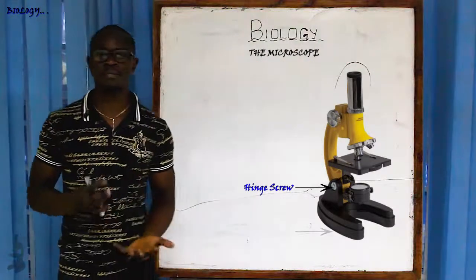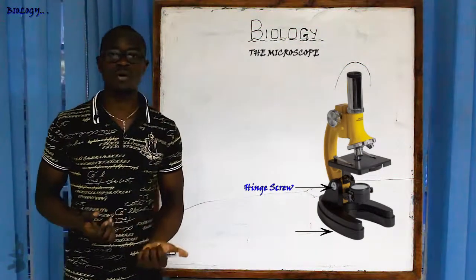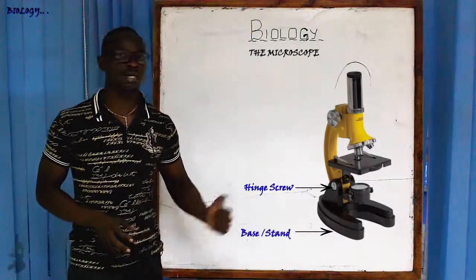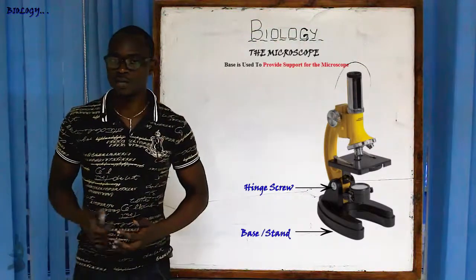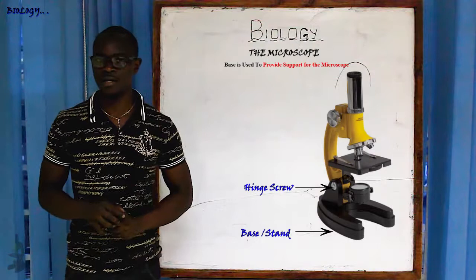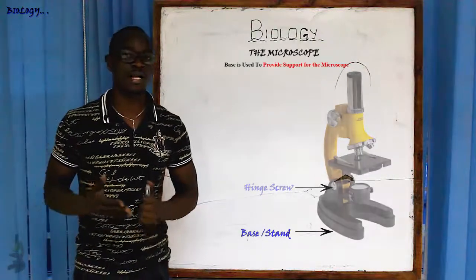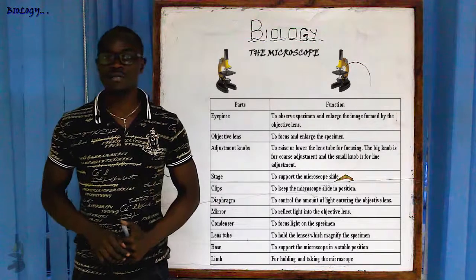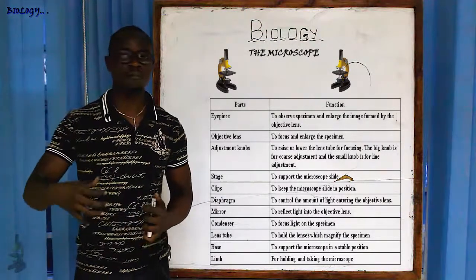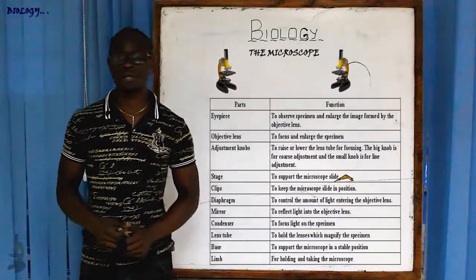Lastly, we have the base or stand, found at the bottom part of the microscope — just like our feet, which provide us with support. The function of the base or stand is to provide firm support for the microscope. It is also used when handling or carrying the microscope: you hold the microscope by the arm and support it with the base when moving it.